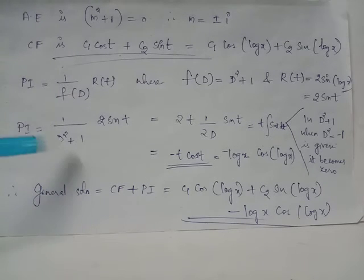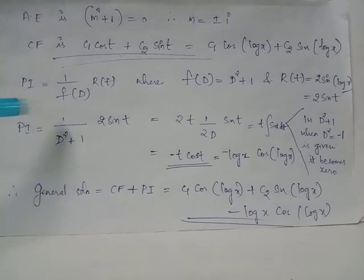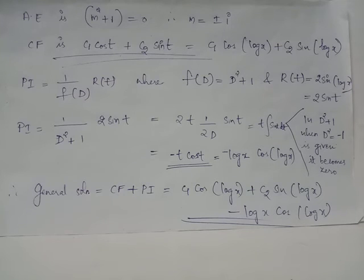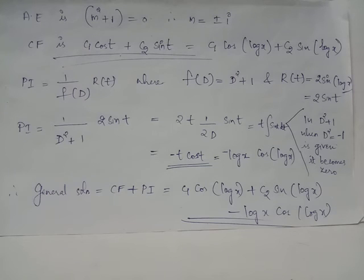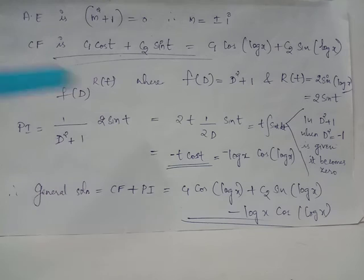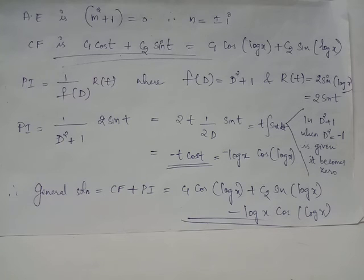When we replace D² by −1, the denominator becomes 0. Hence, we must take the derivative of the denominator with respect to D and simultaneously multiply the numerator by t. Thus PI becomes 2t multiplied by 1/(2D) acting on sin t, where 2D is the derivative of D² + 1 with respect to D. Since 1/D represents integration with respect to t, the 2s cancel and integrating sin t gives −cos t. Therefore, the particular integral for equation 2 is −t cos t.